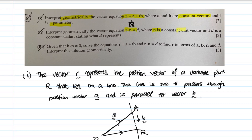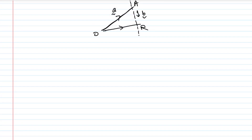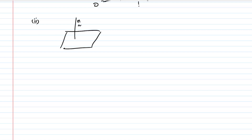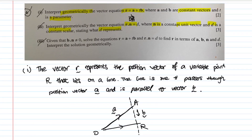Part two: interpret geometrically the vector equation r dot n equals d, where n is a constant unit vector and d is a constant scalar, stating what d represents. This is a question on planes. If you draw the plane, it usually has a normal n going up at 90 degrees to the plane. Based on what we saw in part one, r is likewise the position vector of a variable point that lies on the plane.